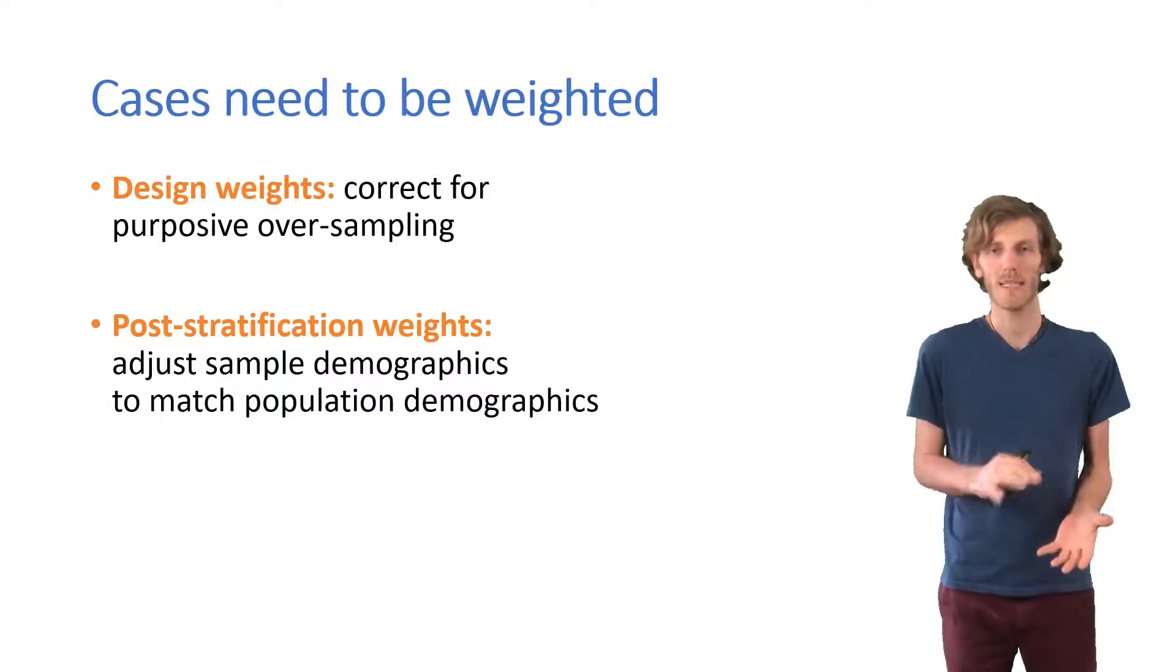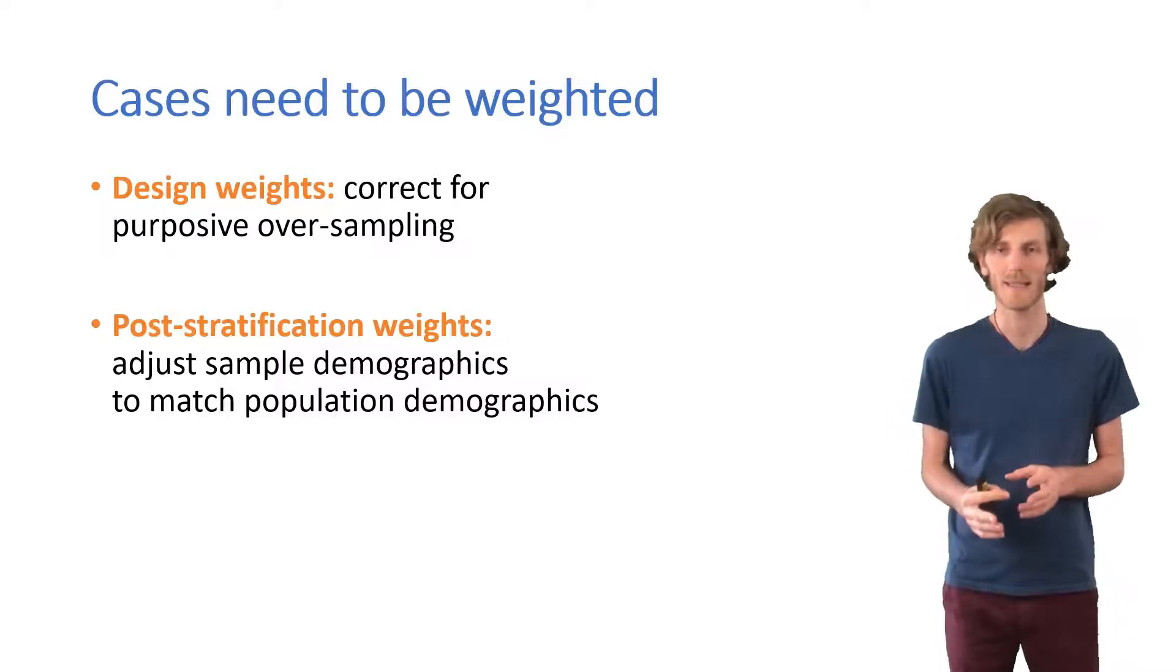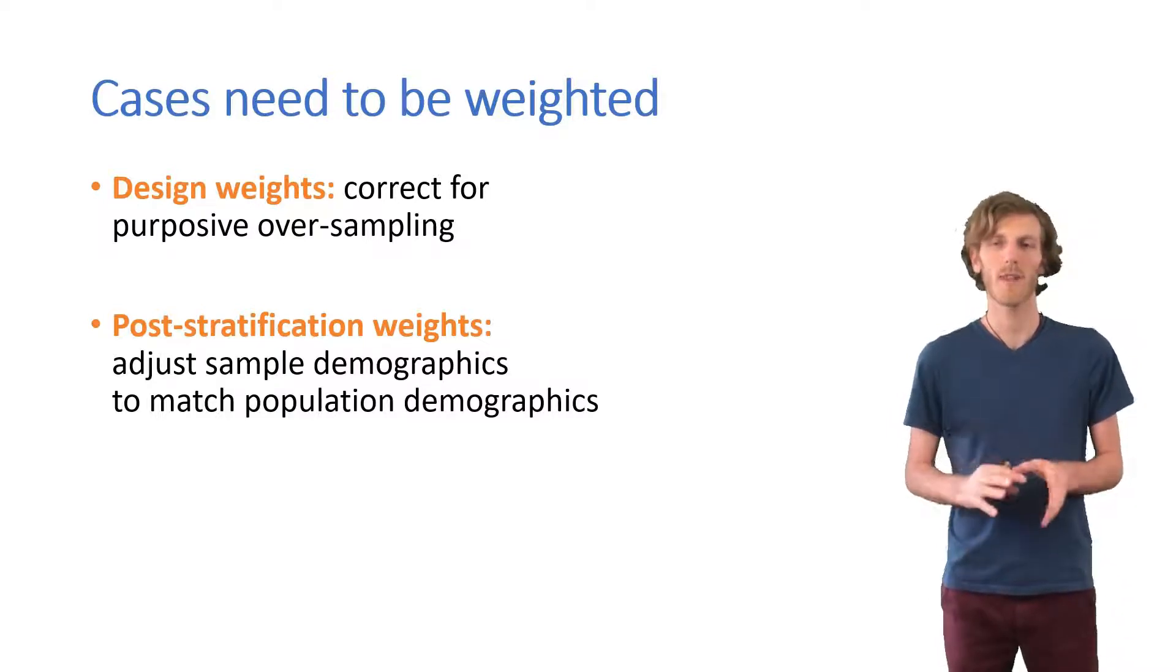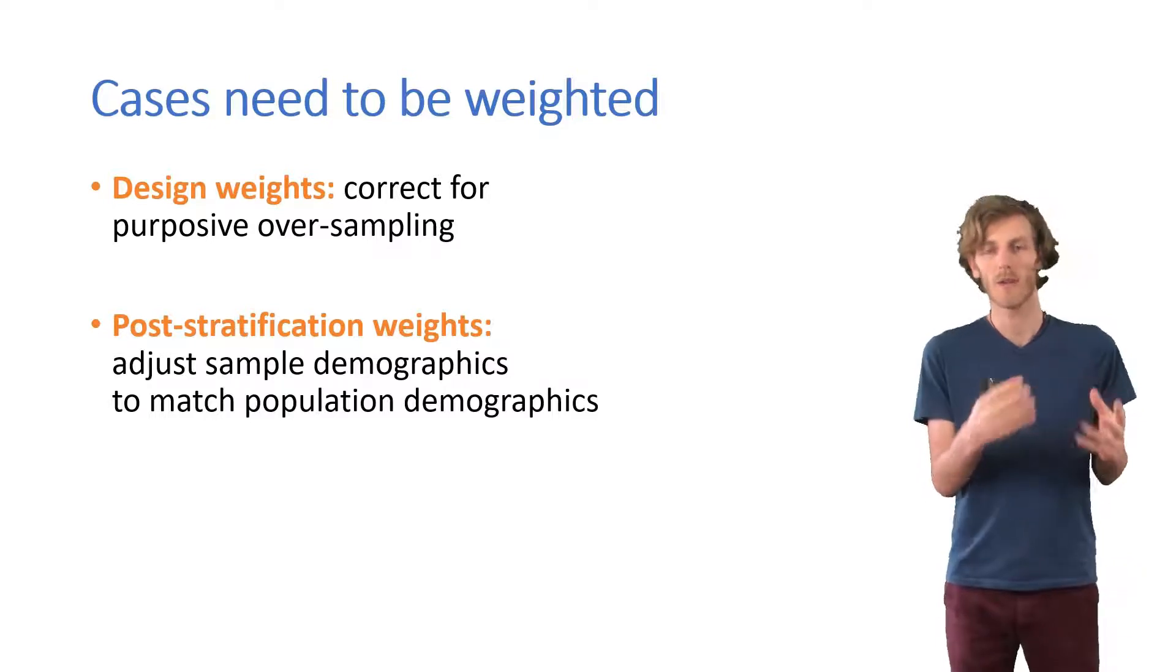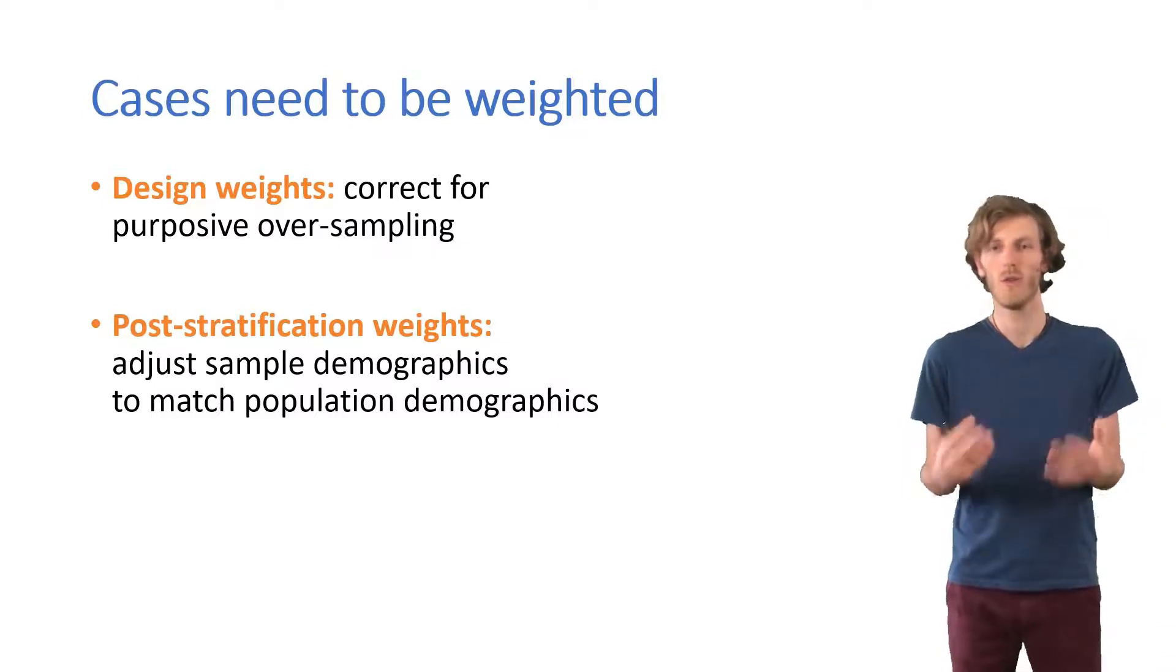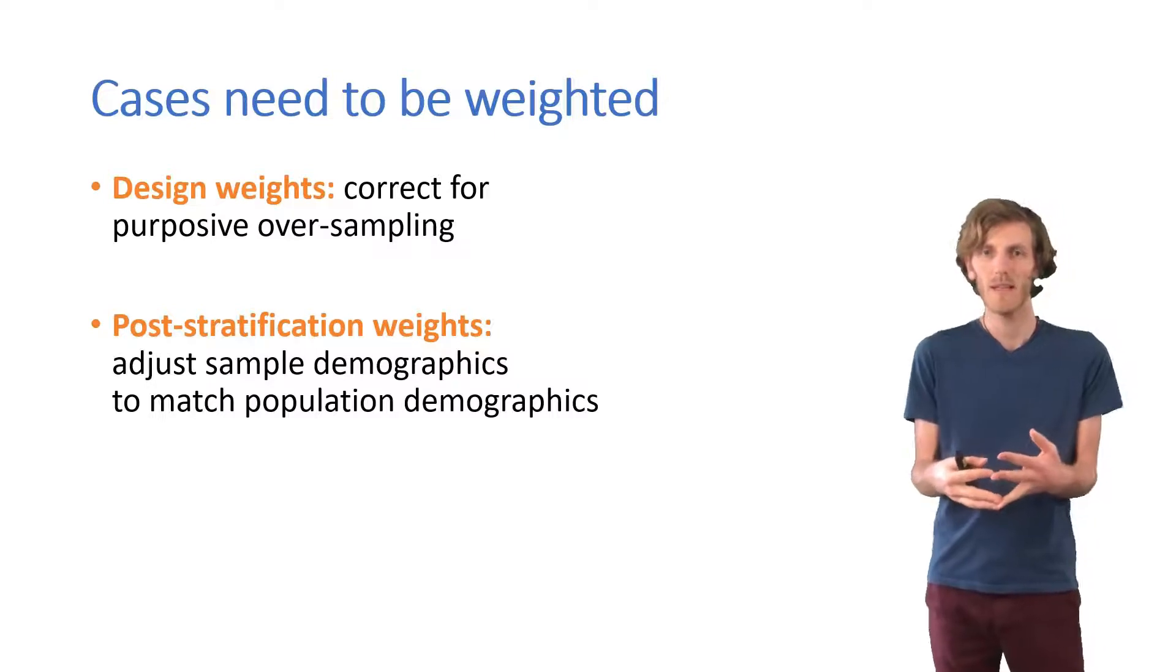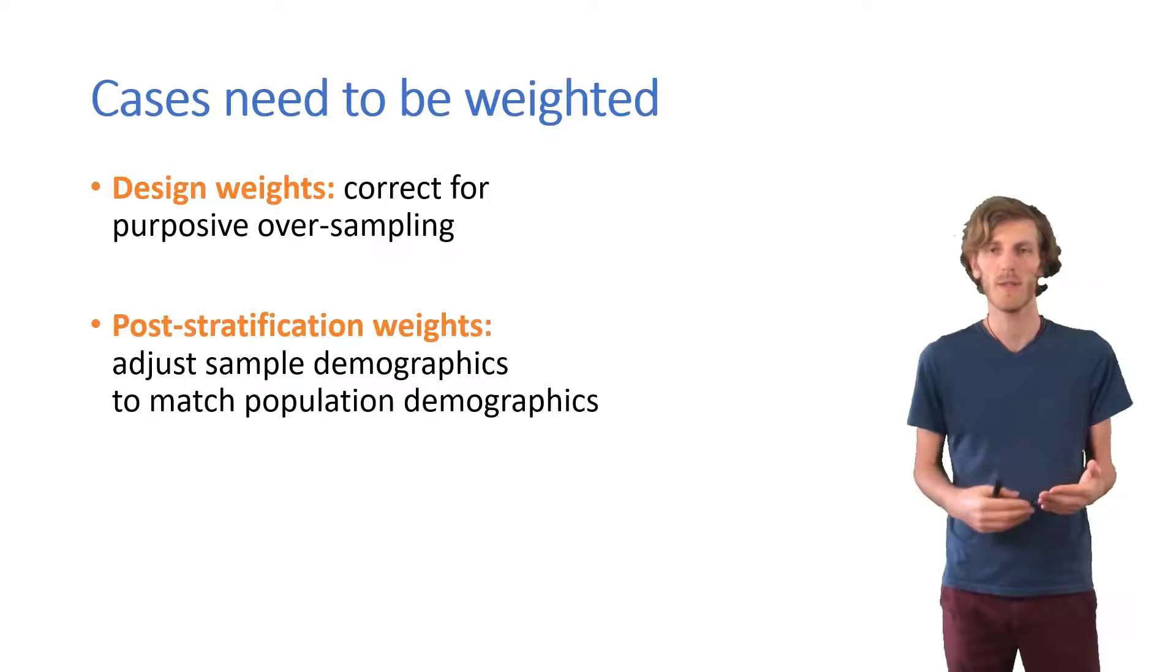Some social surveys give you post-certification weights and the recommendation would be to usually use them. But if you want to calculate them yourself or if you want to critically think about the ones that are provided in the datasets, it's worth noting that it's quite hard to justify which variables to try to correct for through stratification and which variables to ignore. So usually we would include age and gender.